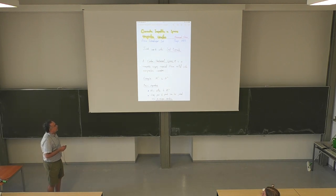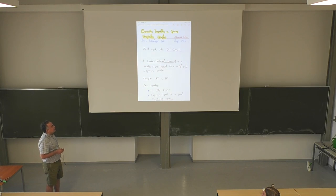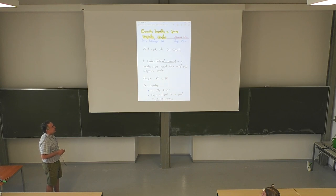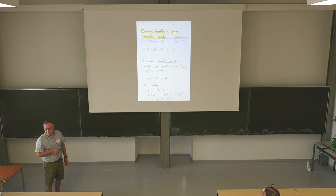Everything I'll be talking about will take place in Cartan-Hadamard space. A Cartan-Hadamard space is a complete, simply connected Riemannian manifold with non-positive curvature. Later I will also say some things that more generally hold in CAT(0) spaces. Examples are Euclidean space and hyperbolic space, both of which were mentioned by earlier speakers. Cartan-Hadamard spaces are generalizations of these two spaces.